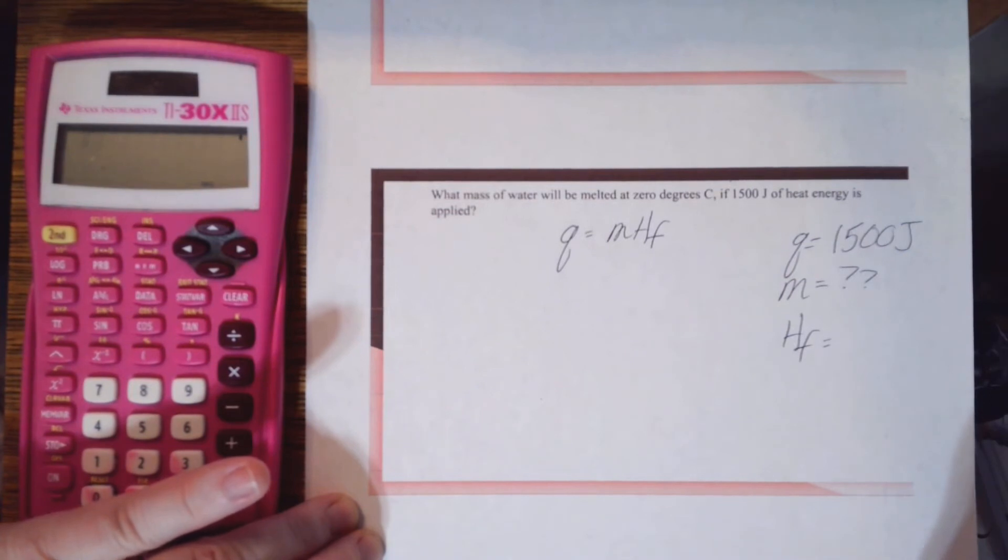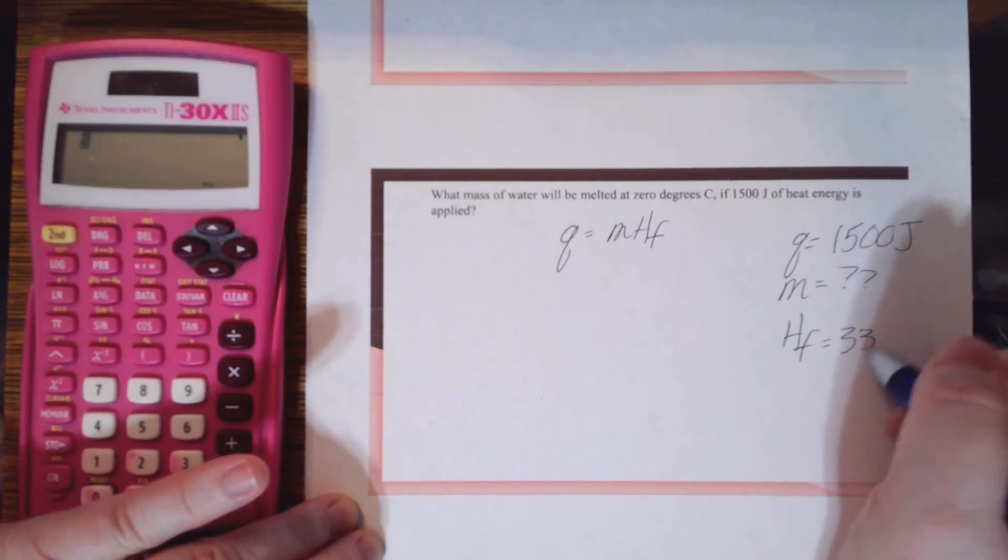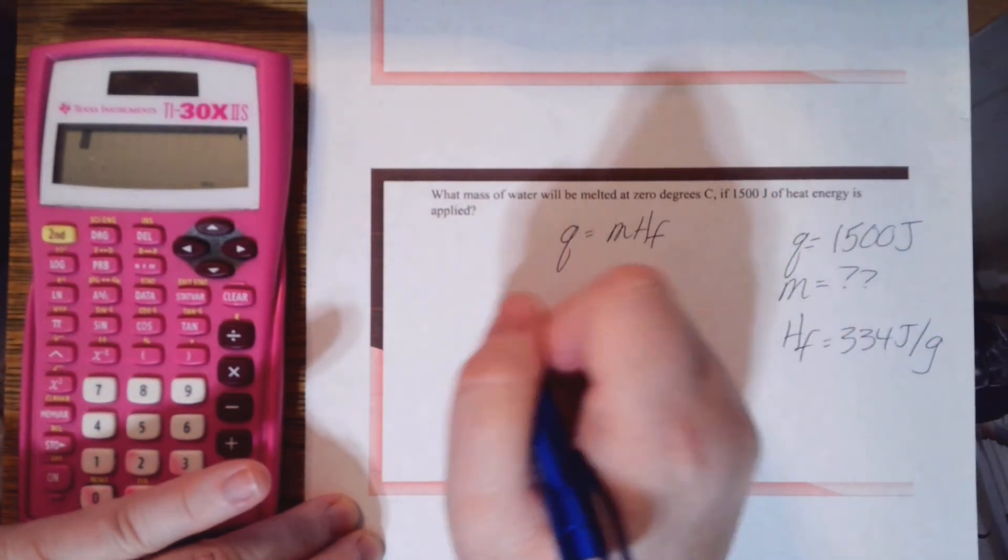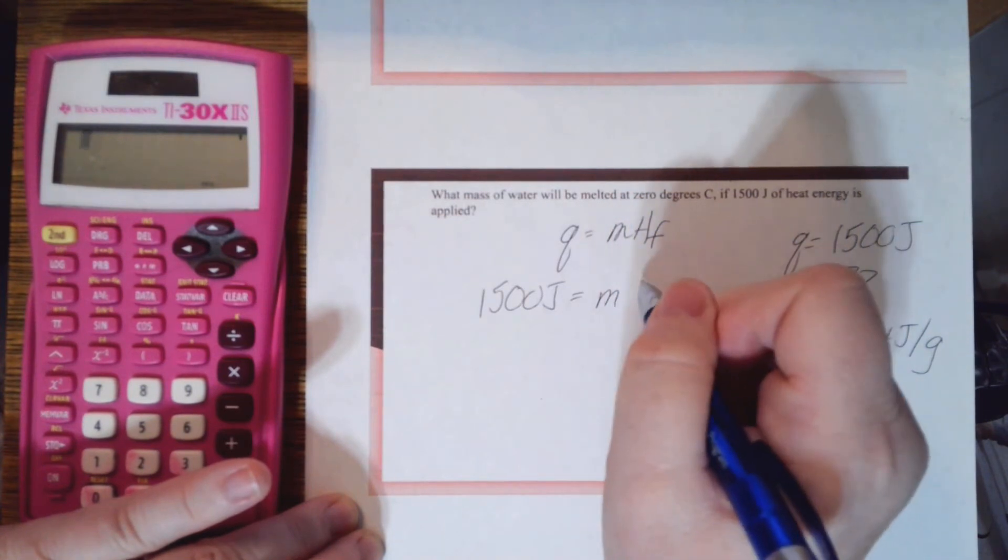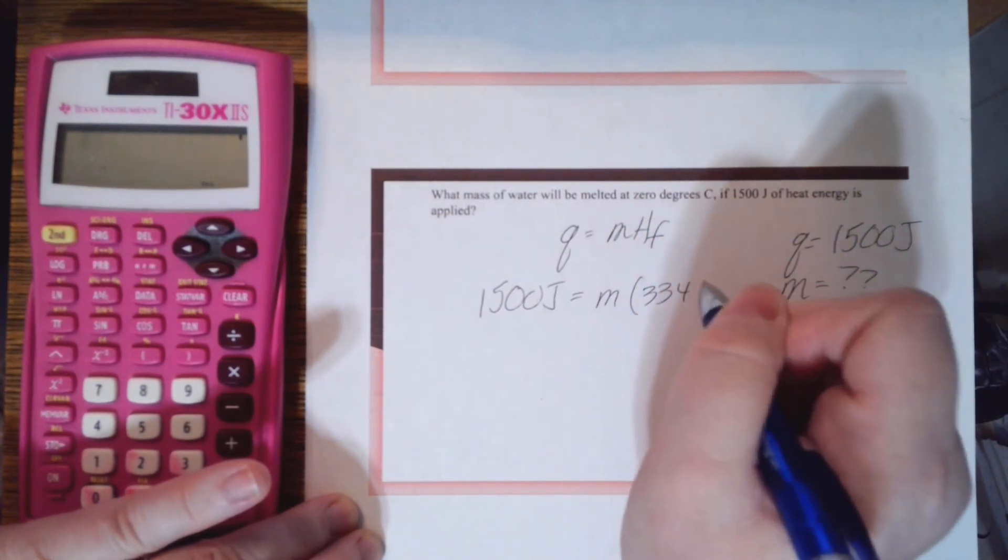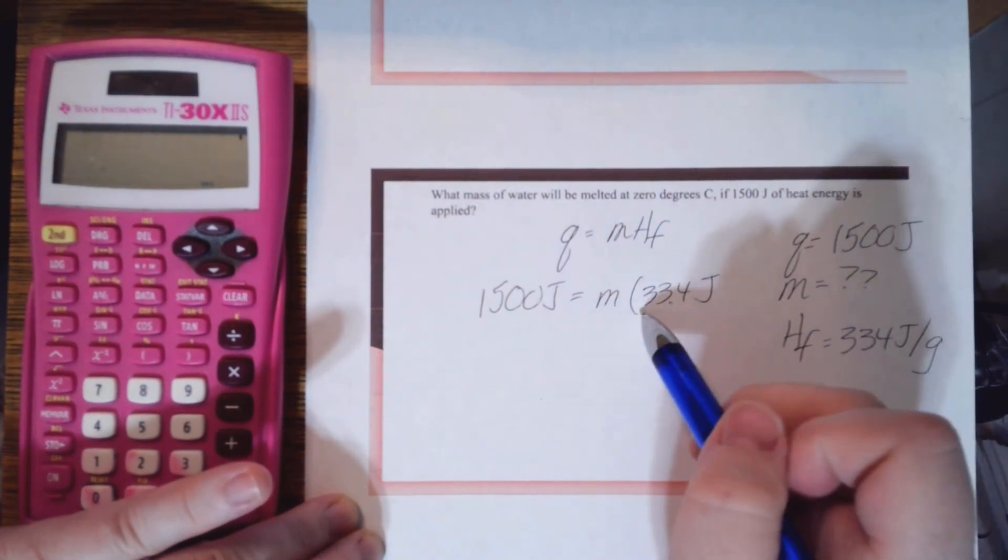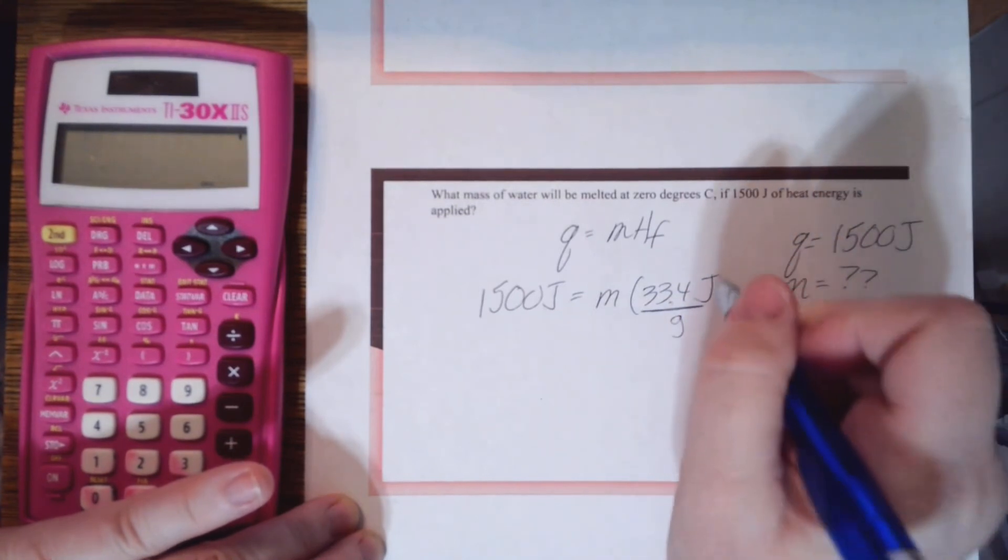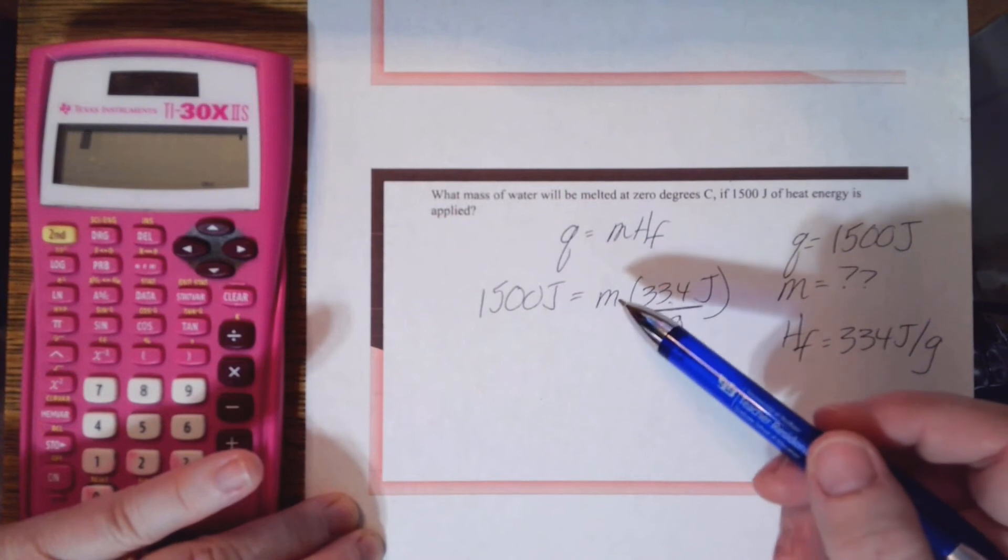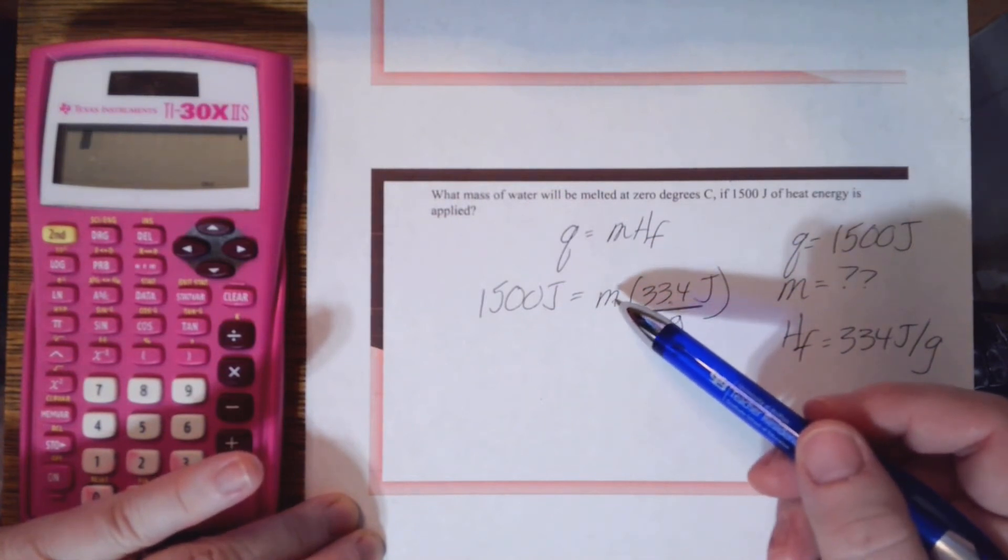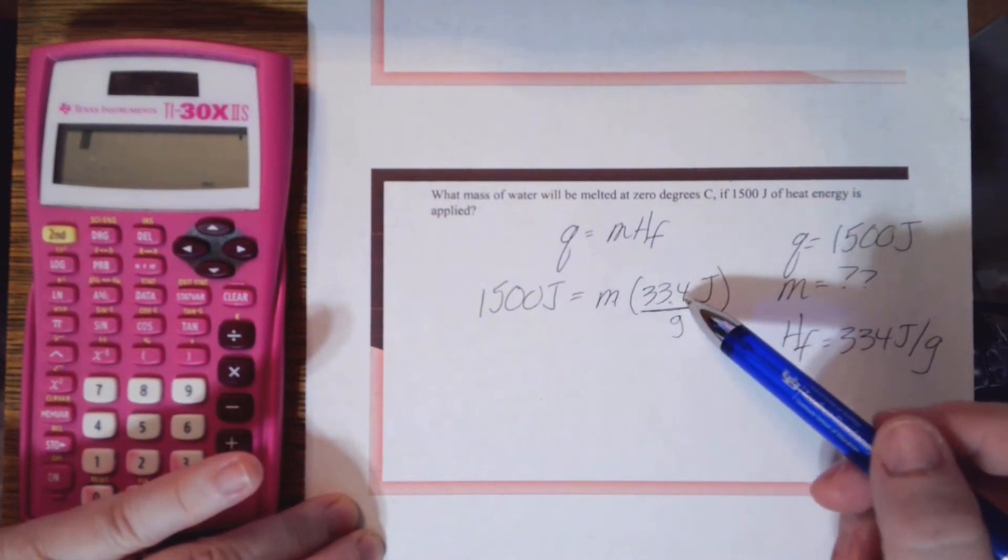Write my list of variables. This time I have 1500 joules for heat. Mass is what I'm trying to find. And I should remember, I just wrote it in the last problem, the heat of fusion of water. So I'm going to plug in numbers where they go. Remember, before I write it, per means it's on the bottom.